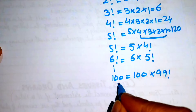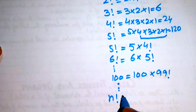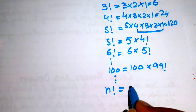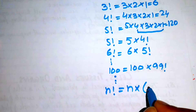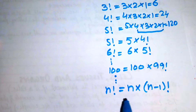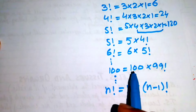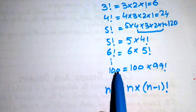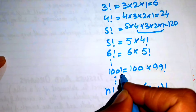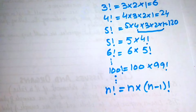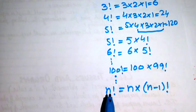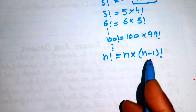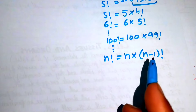In general, we write n factorial equals n times (n minus 1) factorial. Because if you take 100 and decrease by 1 and multiply by that factorial, you get 100 factorial. So now we substitute n factorial equals n times (n minus 1) factorial into the right-hand side of the given equation.